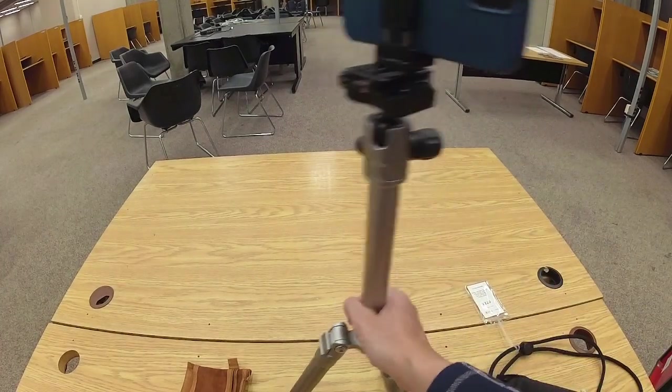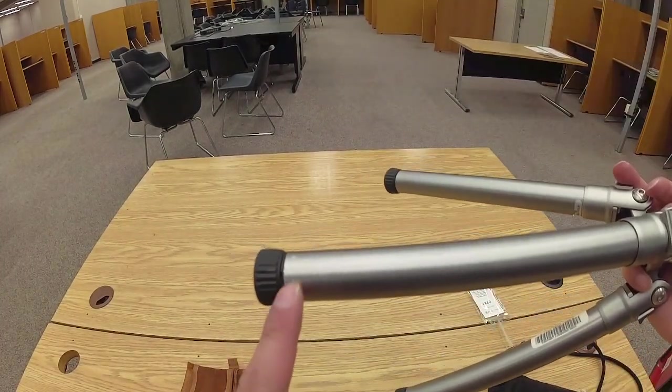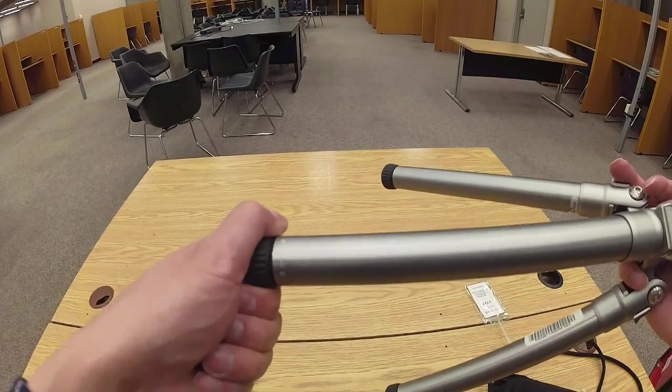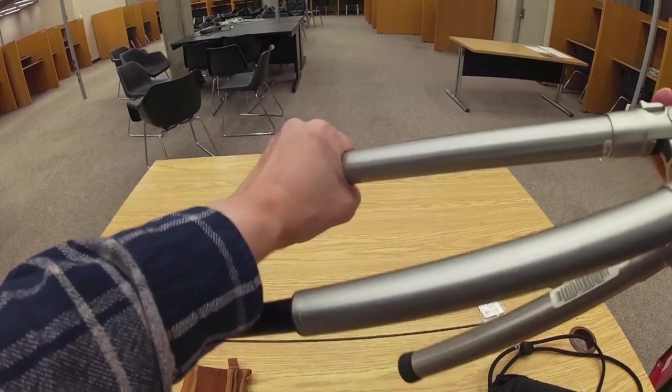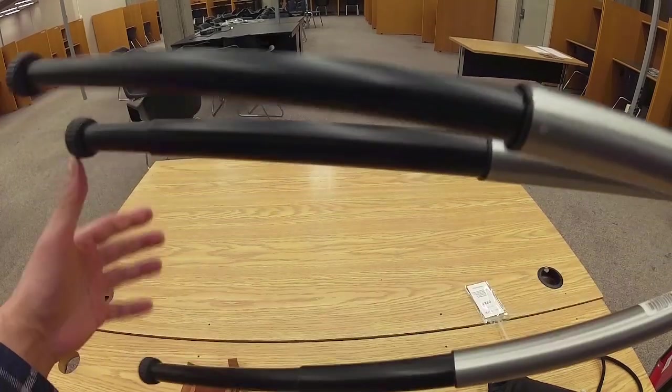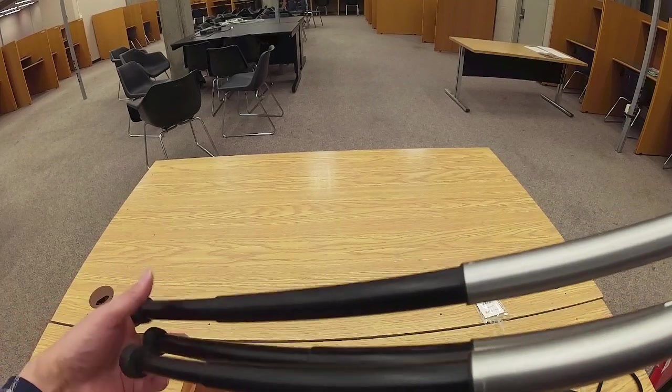Now, to extend the legs, you'll notice there's an icon. It'll show you which direction to turn to loosen or tighten. So actually, if you do plan to extend the legs, I recommend keeping the legs folded inward. That allows you just to make sure that each leg is the same length as the others.